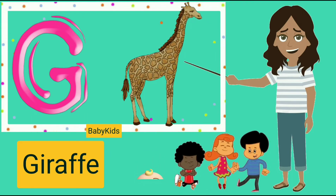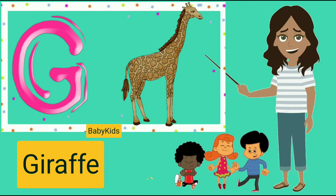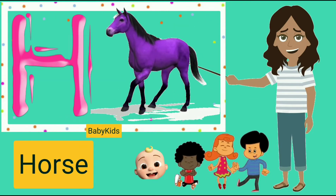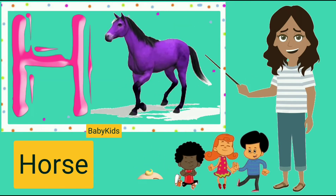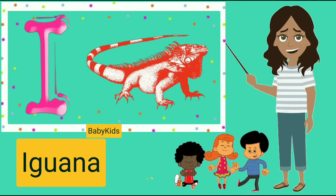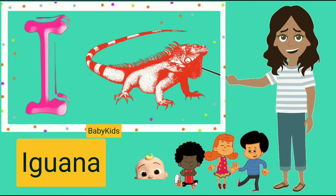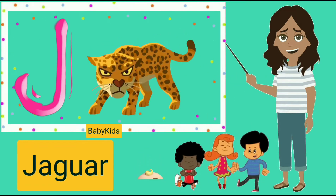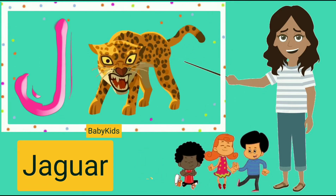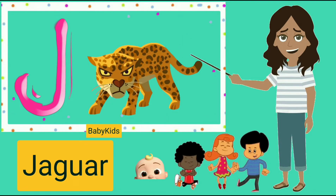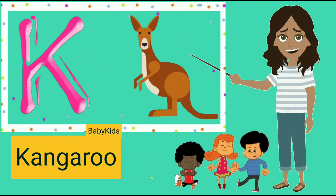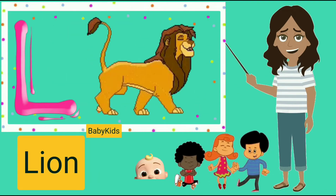E for Elephant, F for Fox, G for Giraffe, H for Hearts, I for Iguana, J for Jaguar, K for Kangaroo.